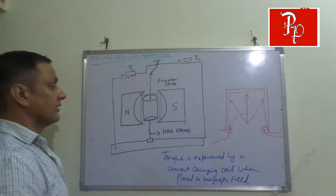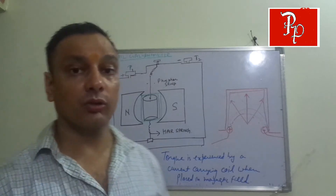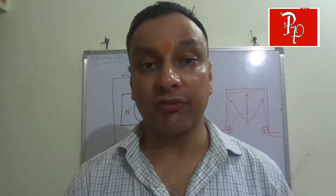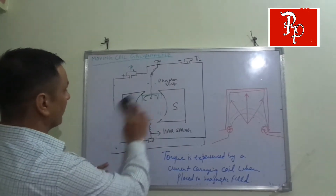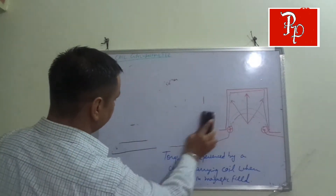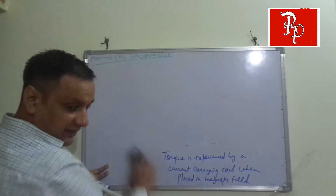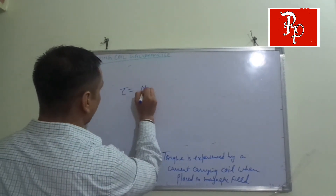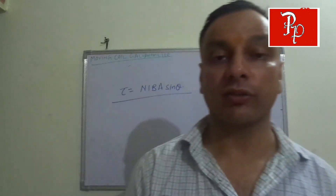This is the diagram of your Moving Coil Galvanometer. Basically, it consists of a soft iron core and magnets that generate the magnetic field. We know that torque is given to us by the formula: torque = NIBA sinθ. This we have already studied in our previous videos, where we also discussed how a current-carrying coil experiences a torque in a magnetic field.